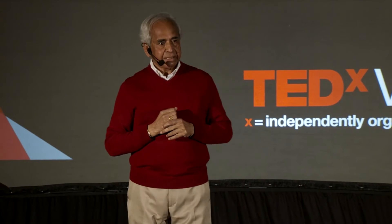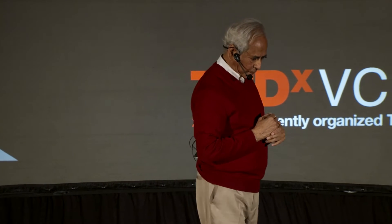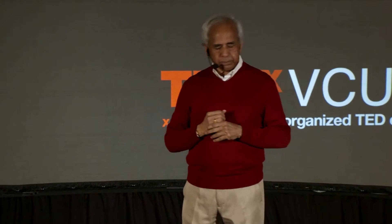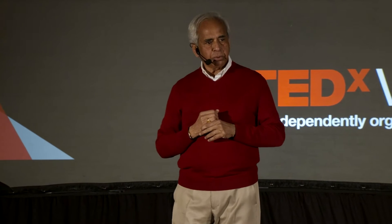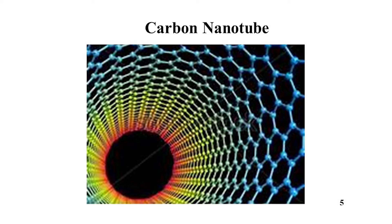Six years later, in 1991, Sumio Iijima of Japan found out that you can take these graphite layers and fold them up to make a tube. And this is called a carbon nanotube.